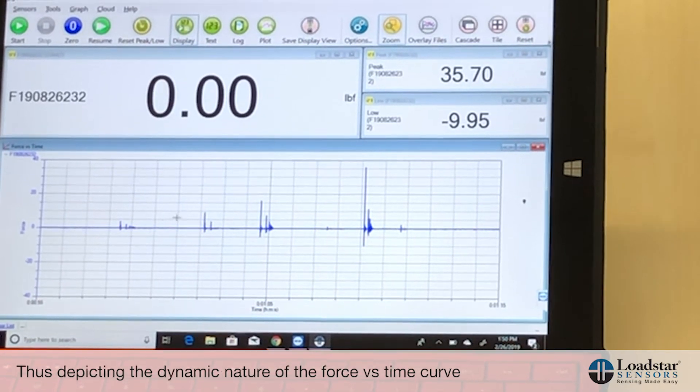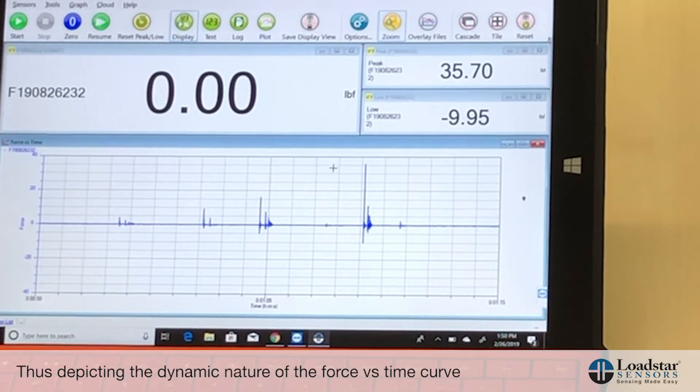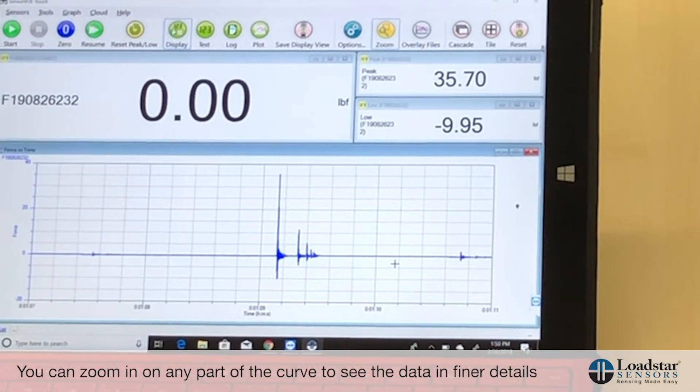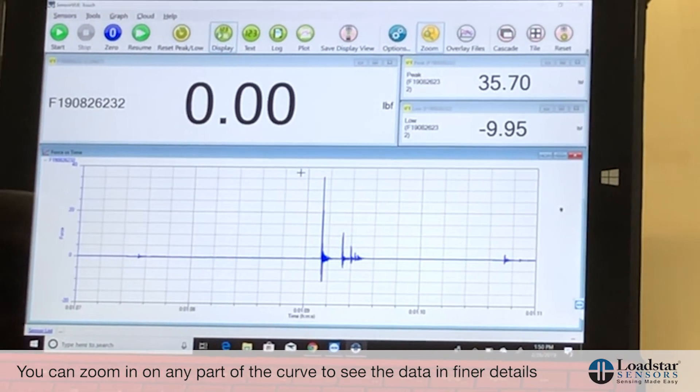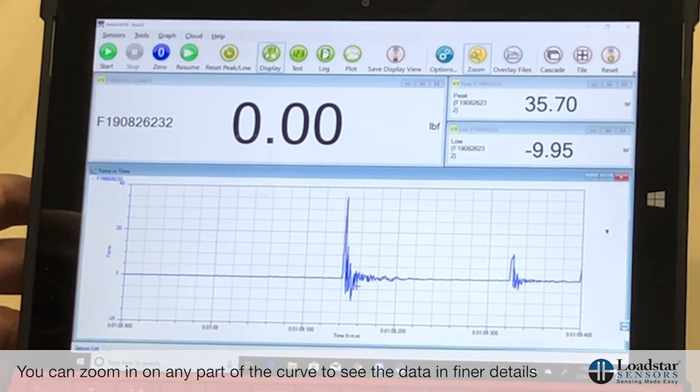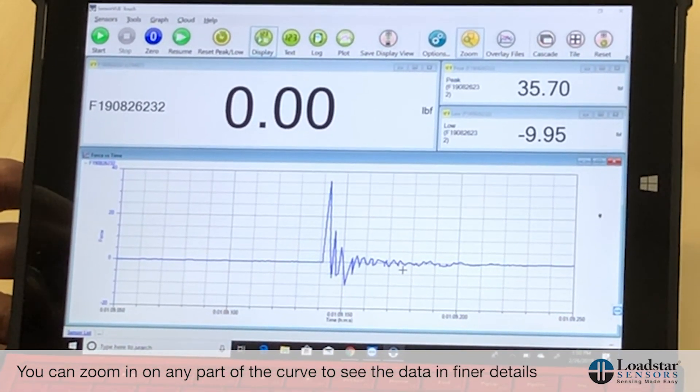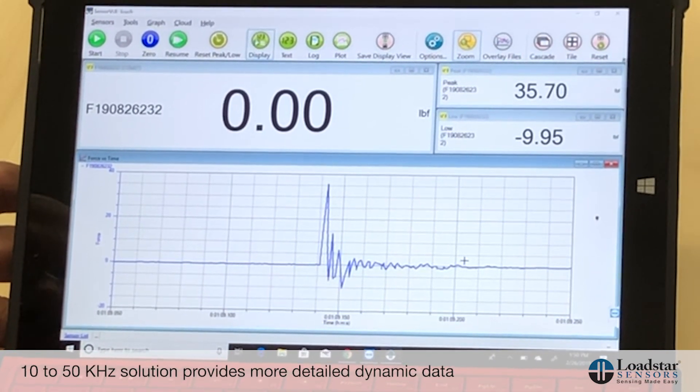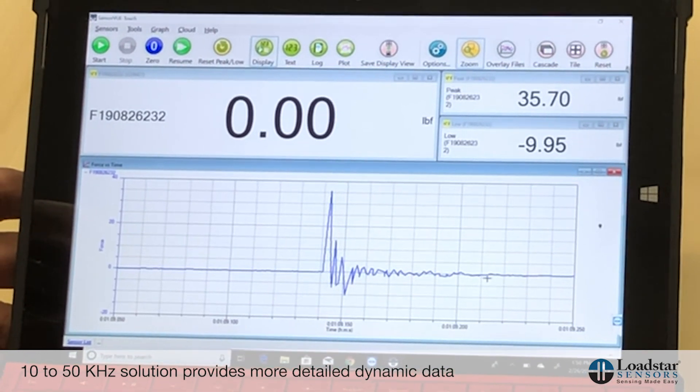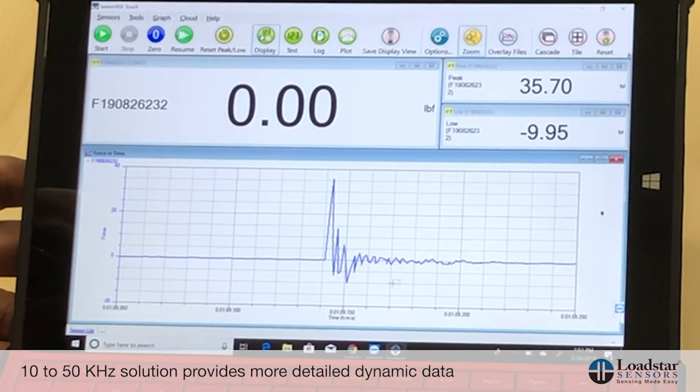If you want to zoom in to take a look at any particular run, you can do that and see the data in much finer detail. You can see that even though this is just 1 kilohertz data update rate, you can get a nice force versus time dynamic force capture. If you really want very clean dynamic response, you should go with the 10 to 50 kilohertz solution that we offer, and that will give you beautiful dynamic force versus time curves.